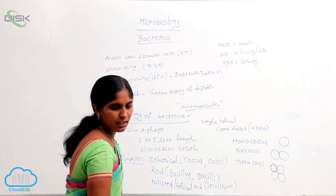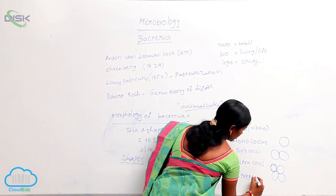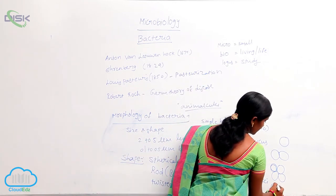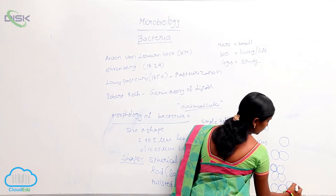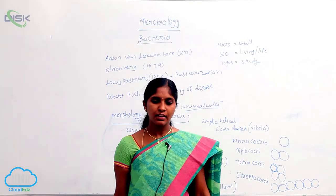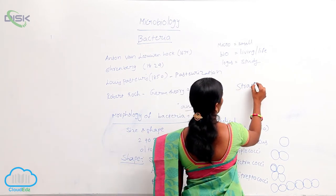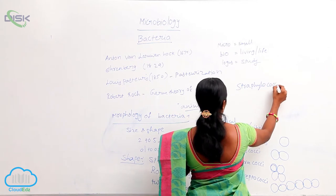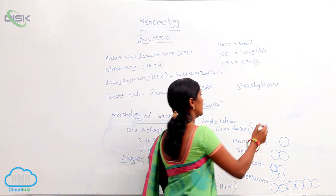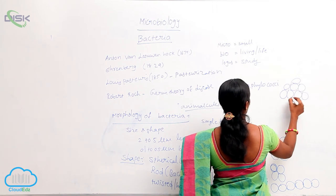Next is streptococcus. Here, a number of spherical bacteria are grouped together and form a long chain — that is streptococcus. Next is staphylococcus. In staphylococcus, the arrangement is in an irregular shape.